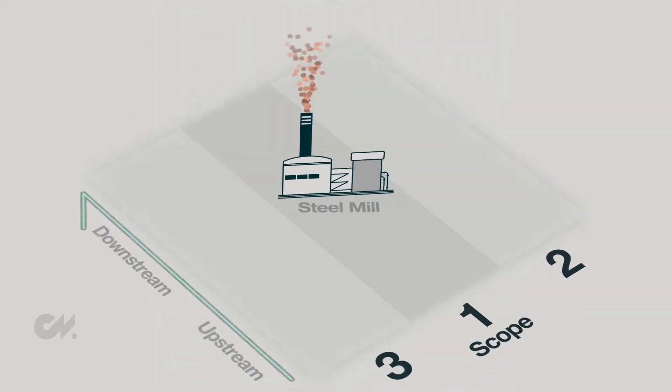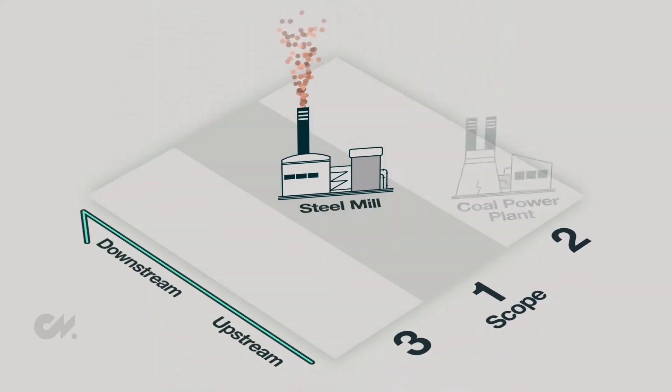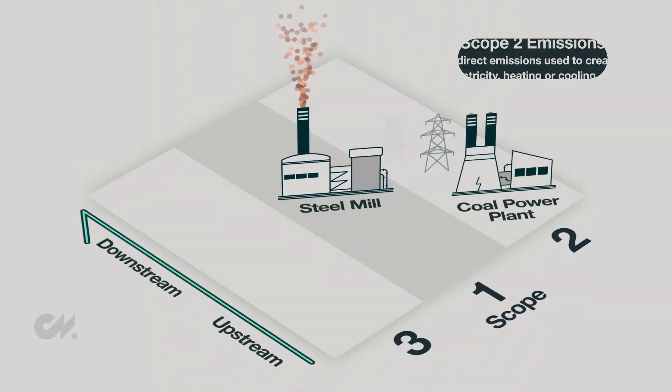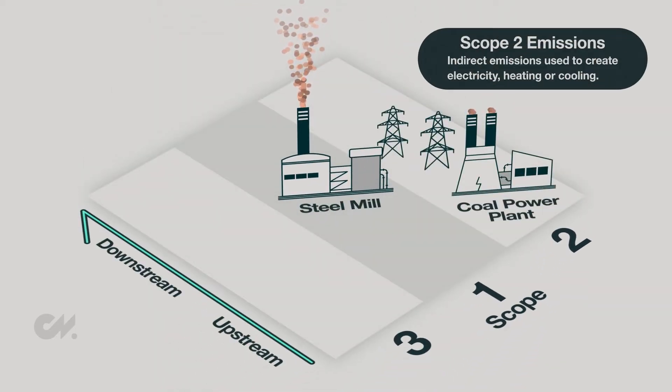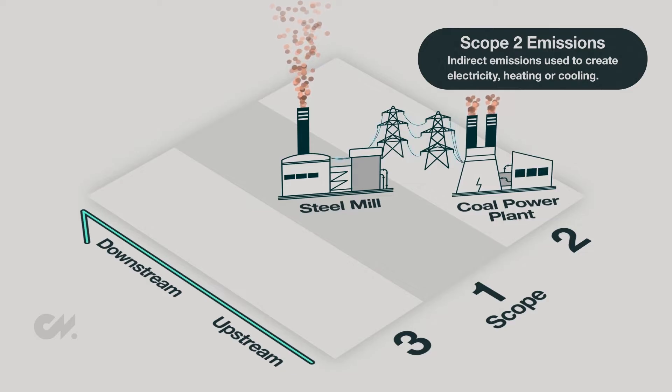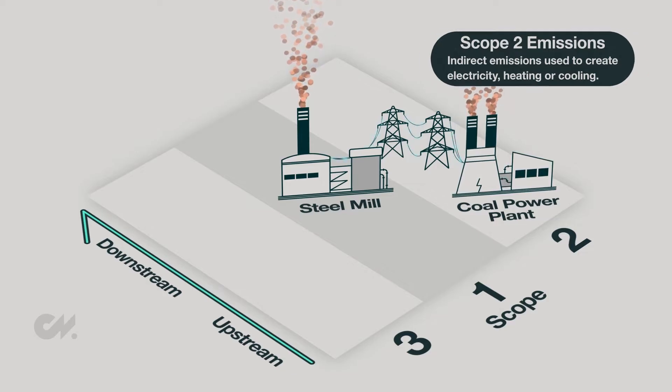Scope 2 emissions are indirect energy emissions. These are the greenhouse gases produced to create the electricity, heating, or cooling for your facilities.